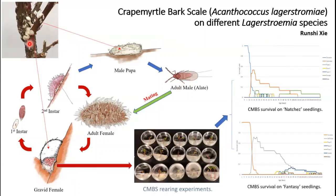The white sacs here on the plant are actually the male pupae and the gravid females, depending on their size and shape.